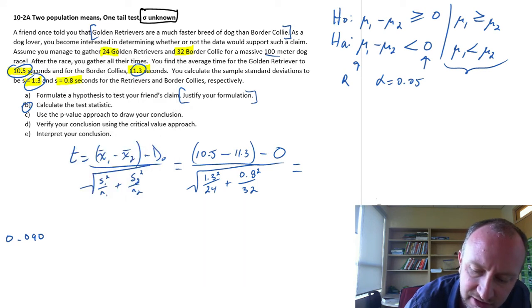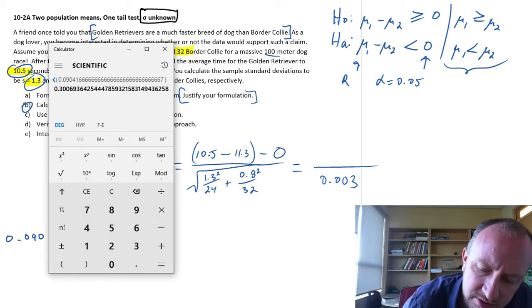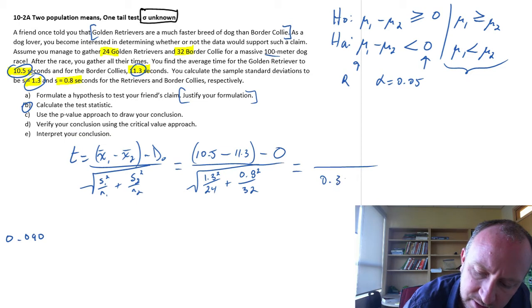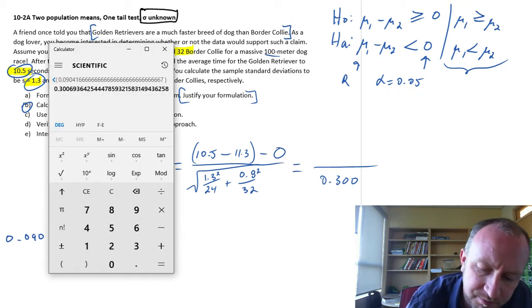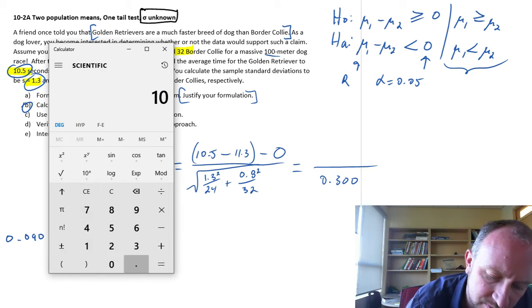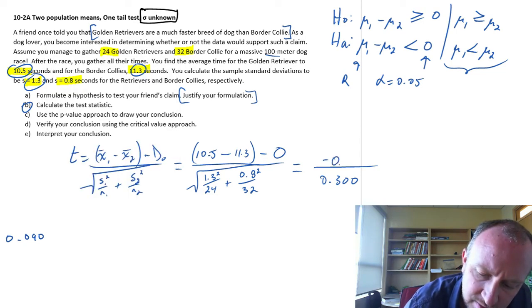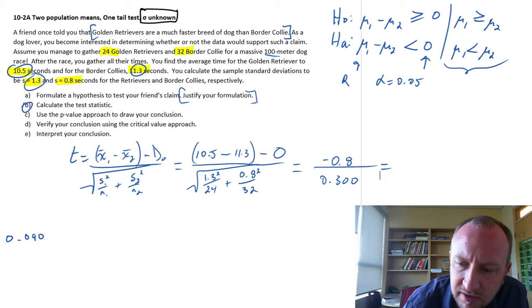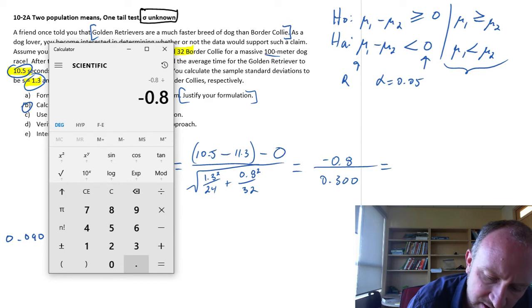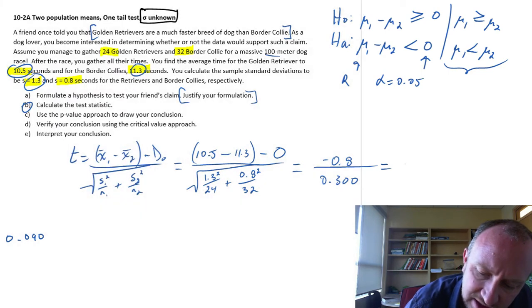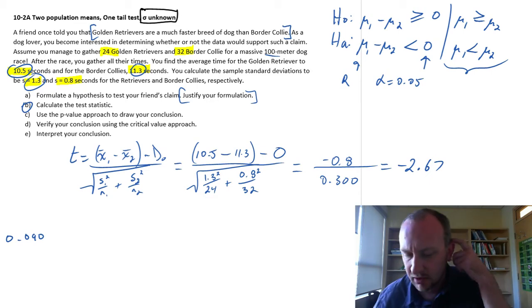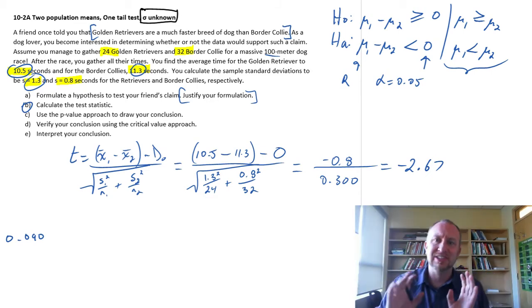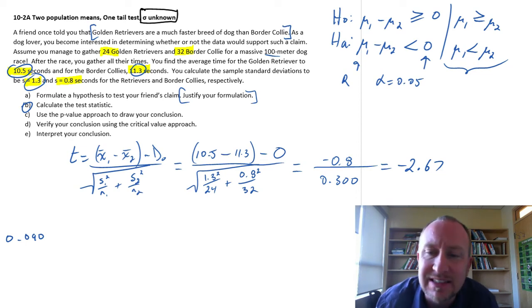Okay so that's just in my denominator. And then I'm going to square root that. So I have 0.300 in the denominator. And our numerator is 10.5 minus 11.3 negative 0.8. And so this gives us finally a test statistic. 0.8 divided by 0.3, negative 2.67. Okay so that's actually the easy part now. Doing that calculation. Because the next step.